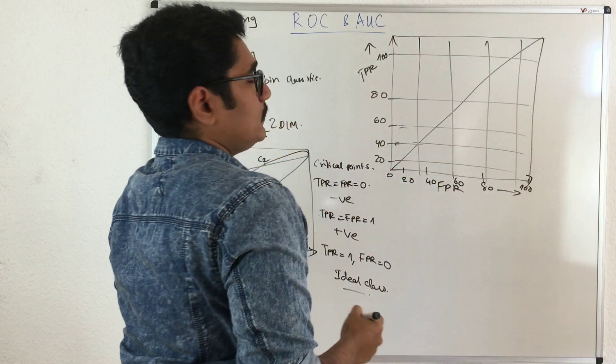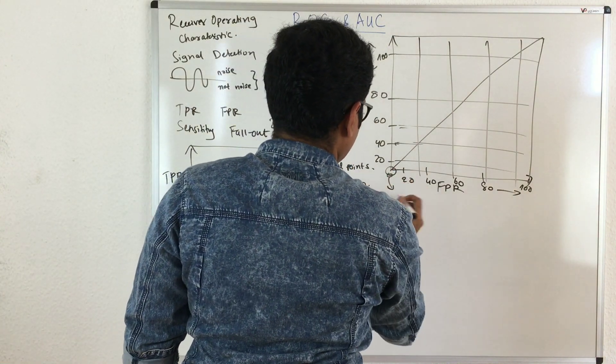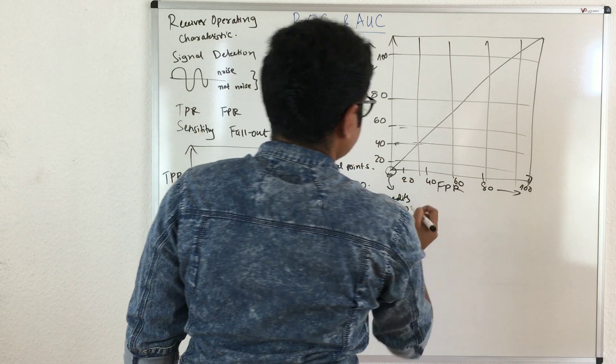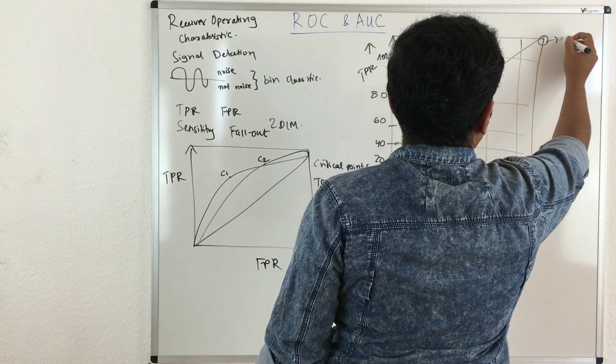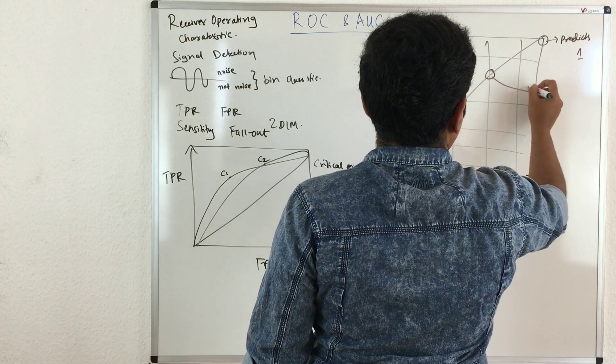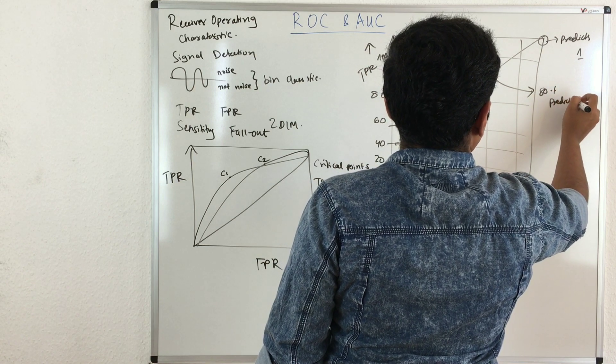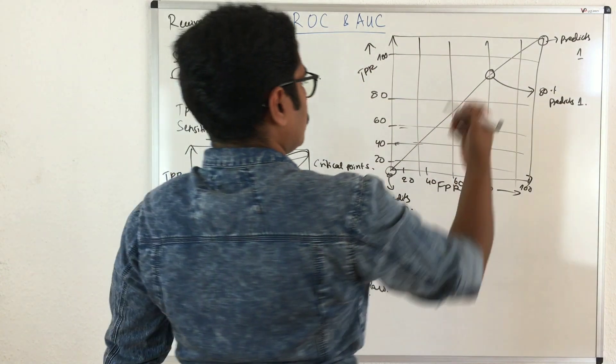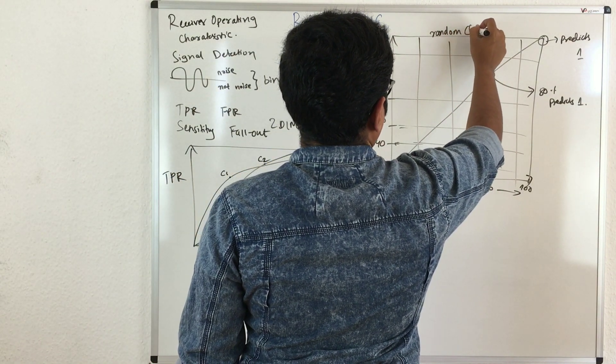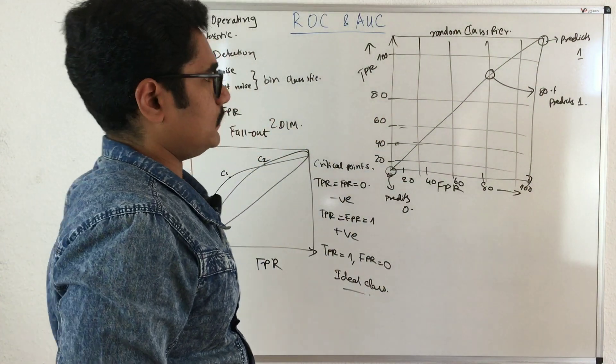So on this, let's do some baseline analysis. At this point it always predicts to be zero, and at this point it always predicts to be one, and here 80 percent of the time it predicts one. This ROC curve you create for any classifier. We have chosen a random classifier, and for that you have this baseline analysis.